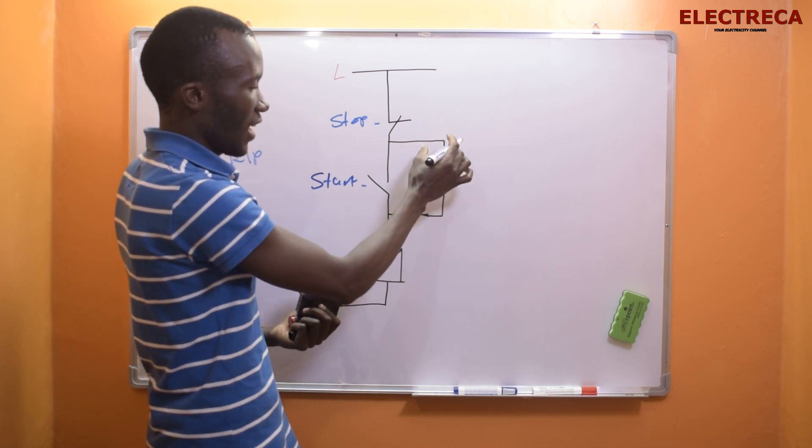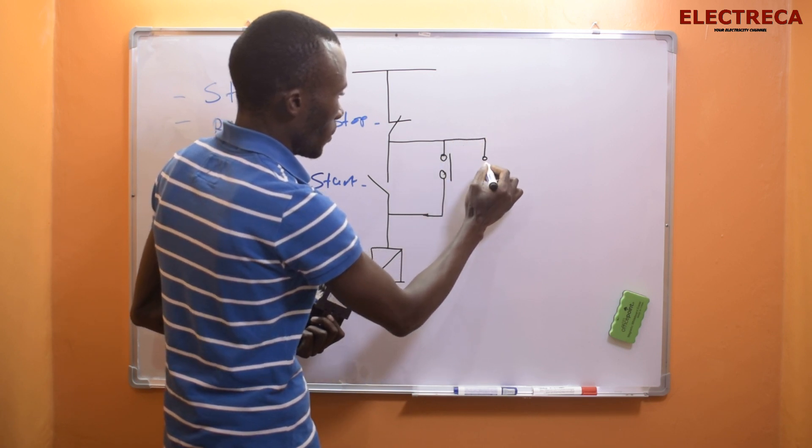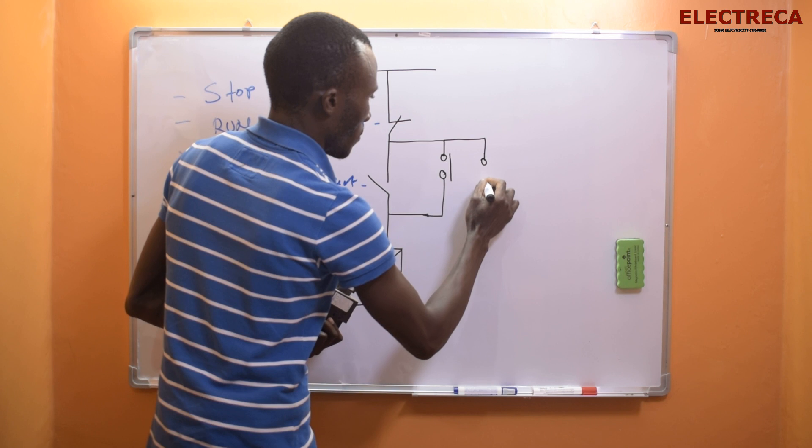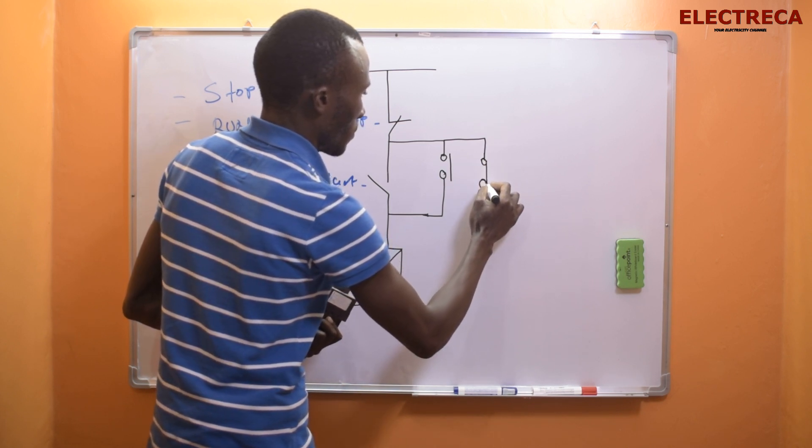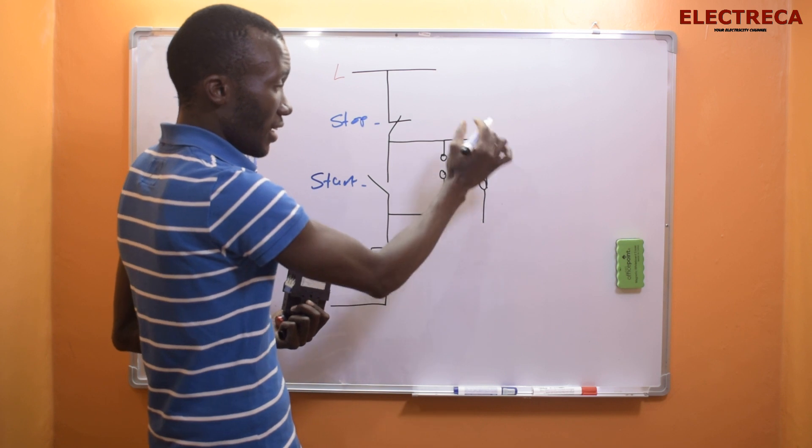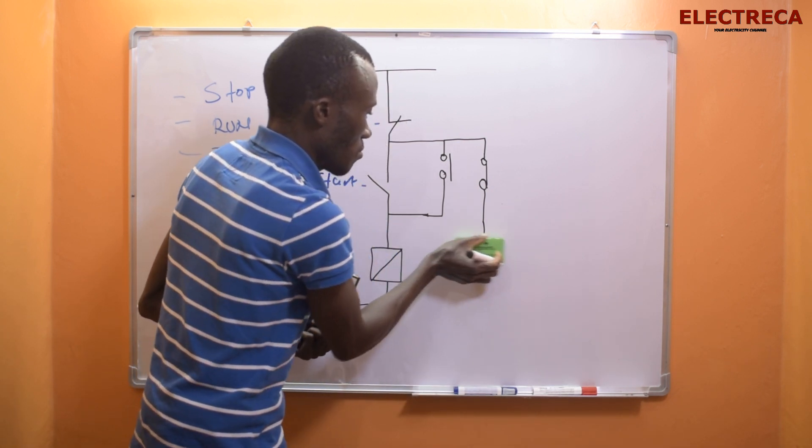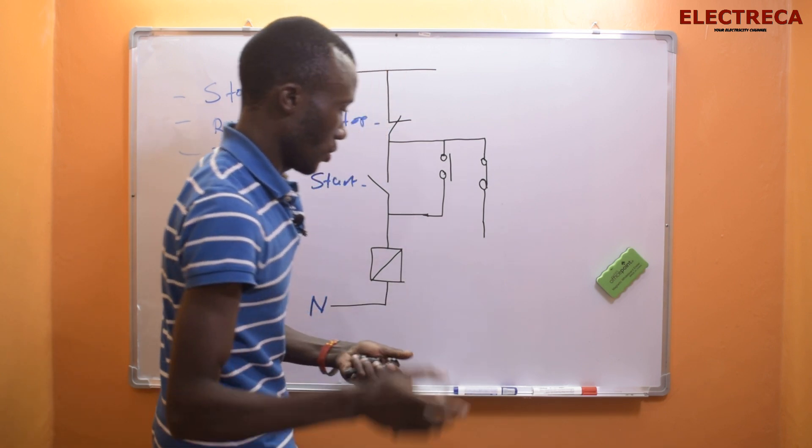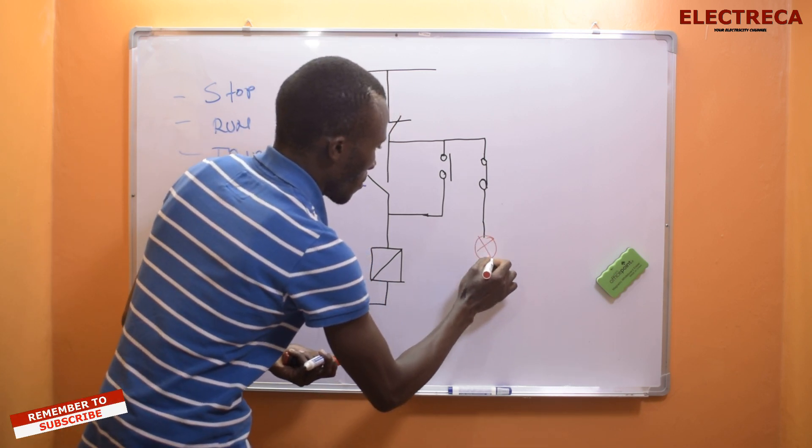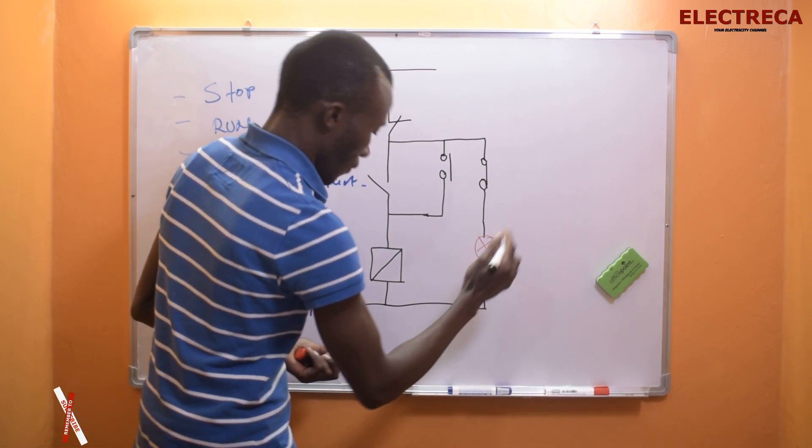So we're just going to add normally closed here. In that case, what we're gonna do is we'll put here a light. So this now becomes our light right there for stop.